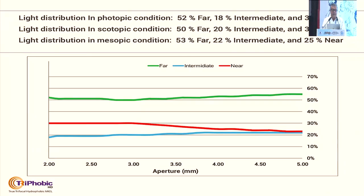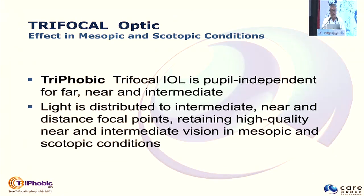It has a unique asymmetric diffractive zone with increasing step angulations and decreasing step height. The light distribution in photopic conditions is 52% for far, 18% intermediate, and 30% near — more or less constant across all pupil sizes. The trifocal IOL is pupil-independent for far, near, and intermediate, distributing light to intermediate, near, and distant focal points, returning high-quality near and intermediate vision in mesopic and photopic conditions.